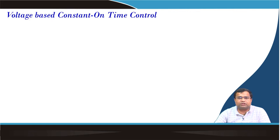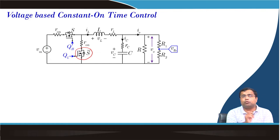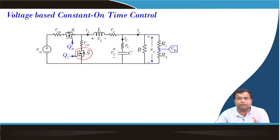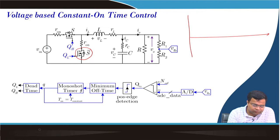If we talk about voltage mode control constant on-time: this is a buck converter, and if we go for DCM then we can replace the turn-off of the switch, then the body diode will act like a conventional diode and it will become a conventional buck converter. In this voltage mode architecture, if we go to the original concept, the output voltage and reference voltage are compared.